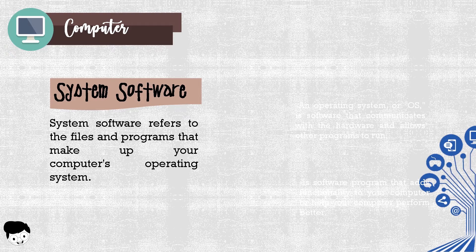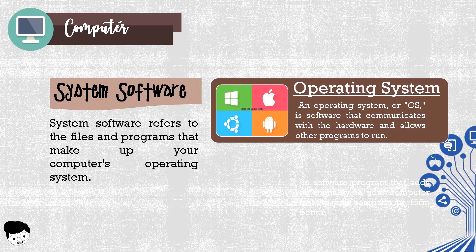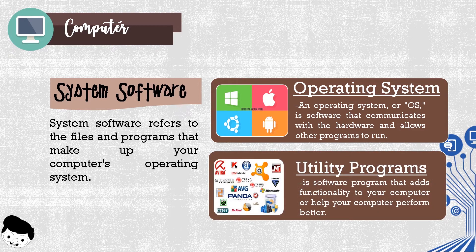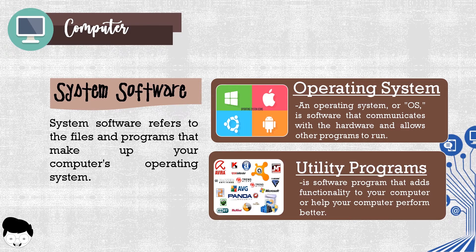There are two types of system software. The operating system, or OS, is software that communicates with the hardware and allows other programs to run. Utility programs, commonly referred to as just utilities, are software programs that add functionality to your computer or help your computer perform better. These include antivirus, backup, disk repair, file management, security, and networking programs. Utilities can also be applications such as screen savers, fonts, icon tools, and desktop enhancements.